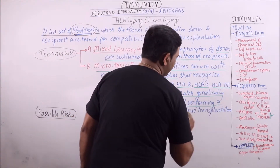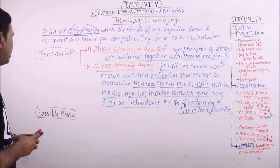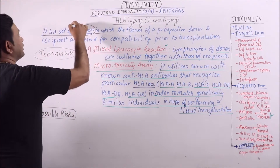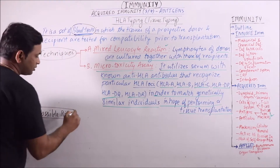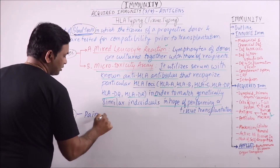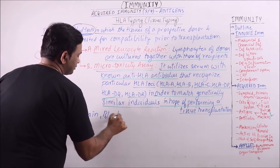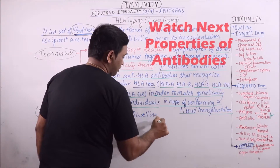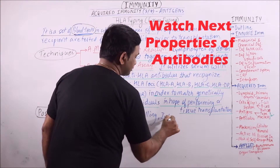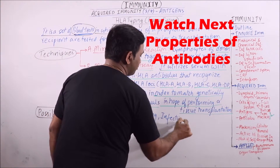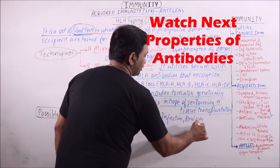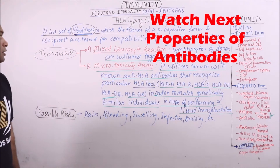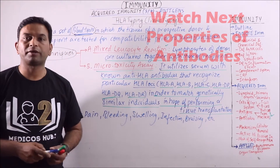This is done in order to match genetically similar individuals in hope of performing a tissue transplantation. Because it is a blood test, possible risks are also related to this blood test, like pain, bleeding, and swelling. This procedure is also known as tissue typing.